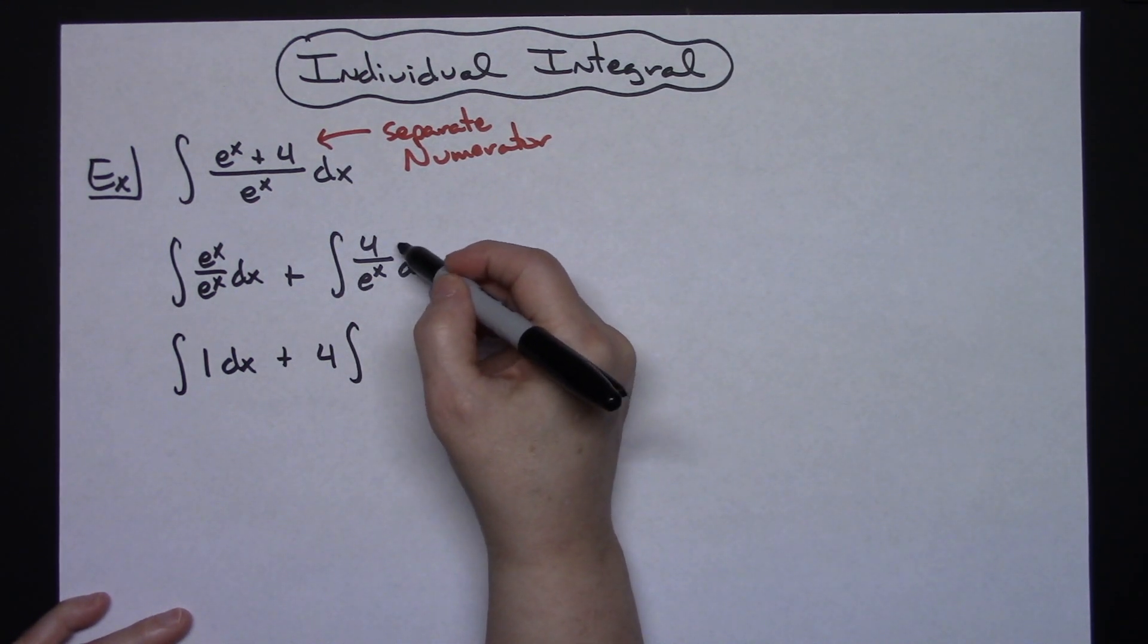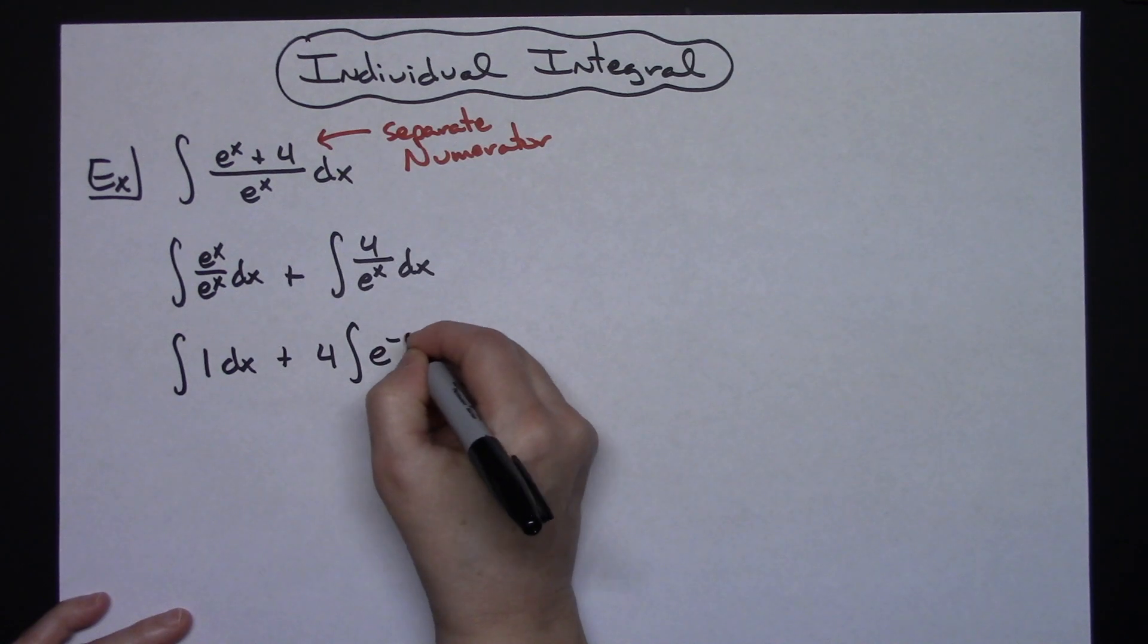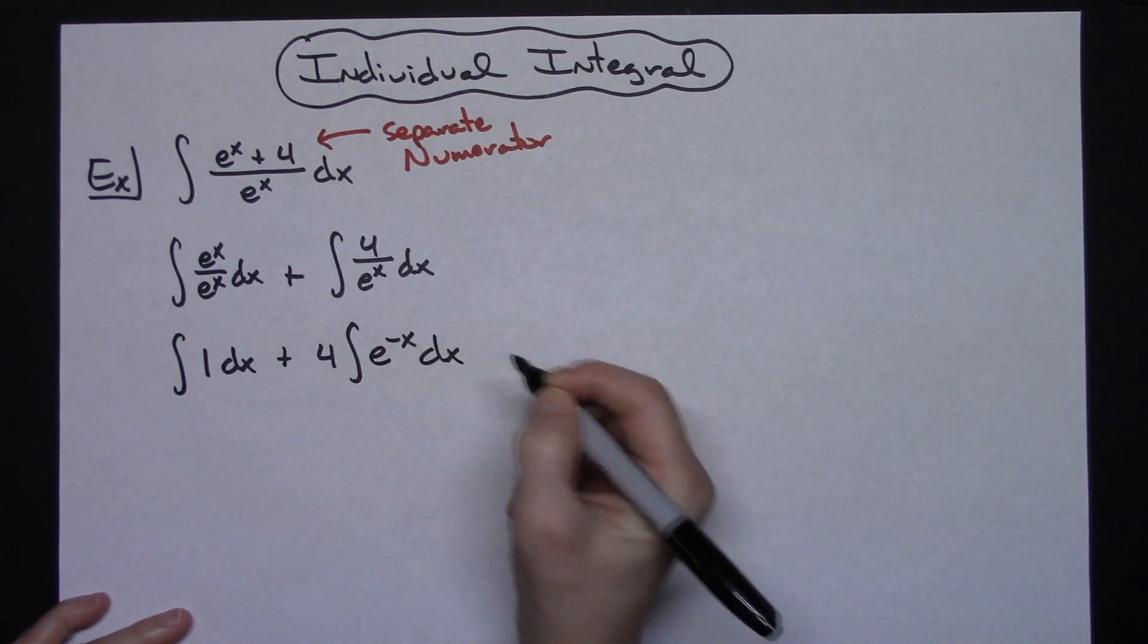Let's go ahead and move that up to the top and use our laws of exponents and make it an e to the negative x so that I can integrate.